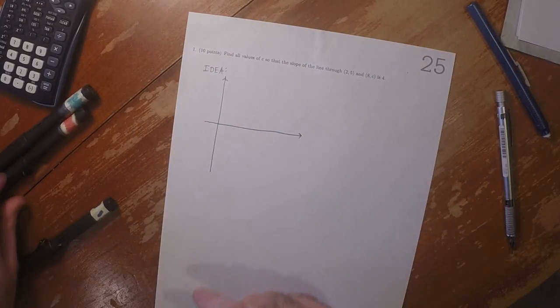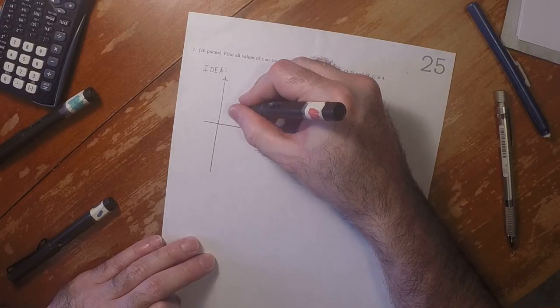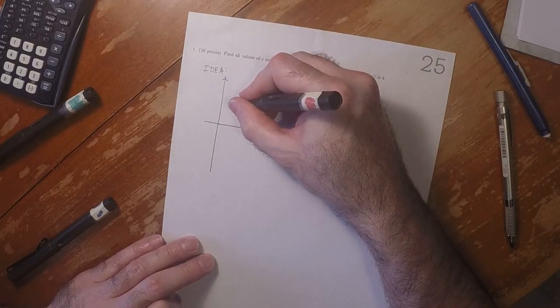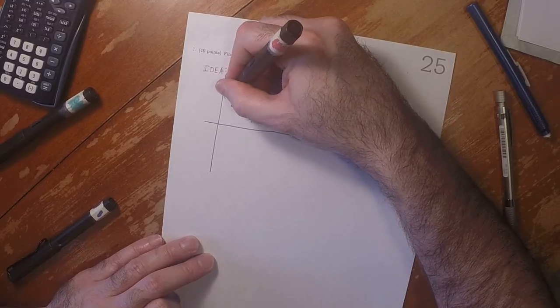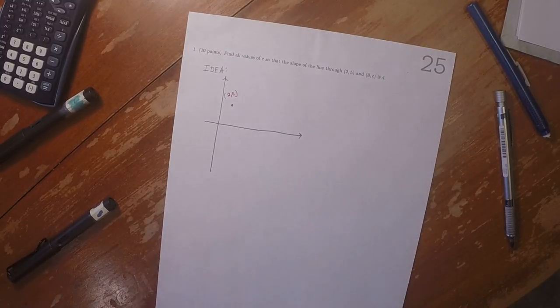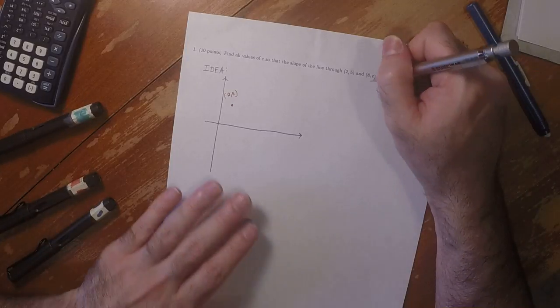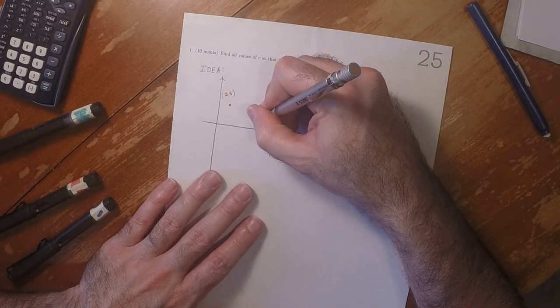So the point (2,5). So if we say that this is (2,5), then x is 8 is over here somewhere.